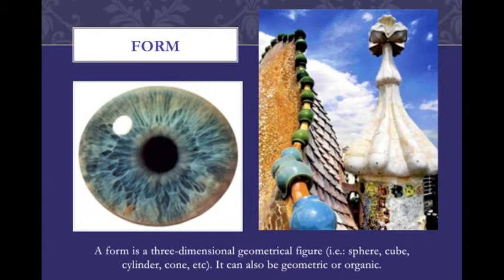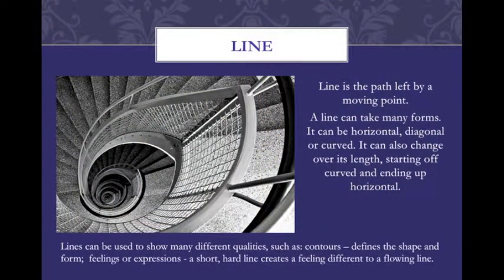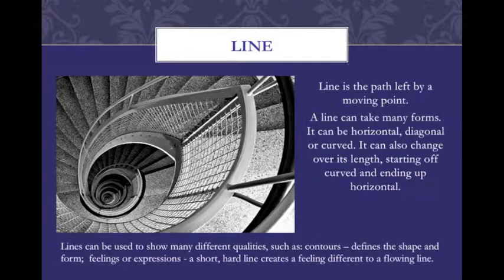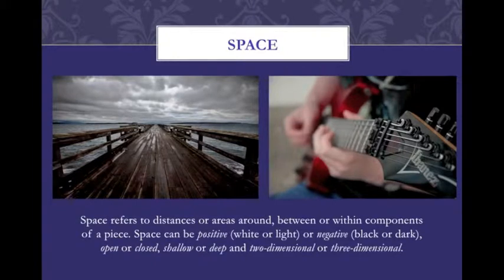Line is the path left by a moving point and is one of the most important elements. A line can take many forms — it can be horizontal, diagonal, or curved, and can change over its length. Lines can be used to show many different qualities such as contours that define shapes and form, or feelings and expressions. For example, a short hard line creates a different feeling than a very flowing line.